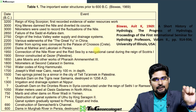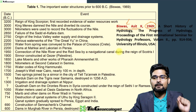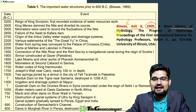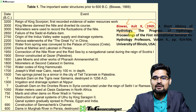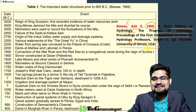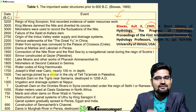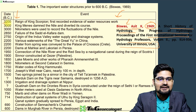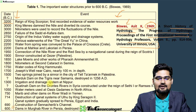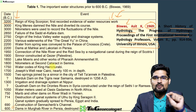An important reference here is Asit K. Biswas, 1969, who published 'A Short History of Hydrology' in the Progress of Hydrology Proceedings at the First International Seminar for Hydrology Professors at the University of Illinois, USA. From this paper, you can observe the sequence of development from 3200 BC till 600 AD. You can pause the video and look into this sequence, picking out the important developments.